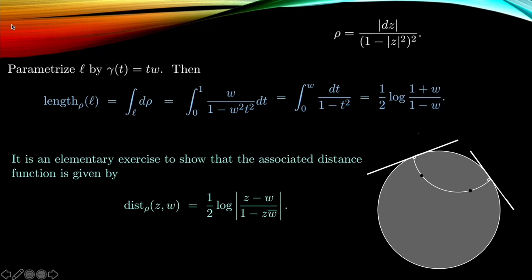And then we can express that by rearranging appropriately as the integral from zero to w of dt divided by (1 - t²). And then elementary calculus will tell you that this is exactly one half of the logarithm of (1 + w)/(1 - w).